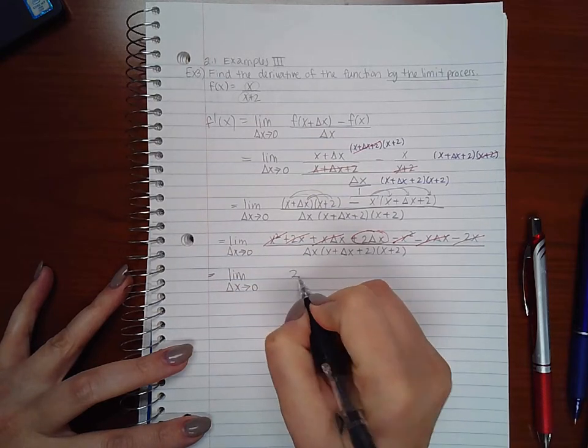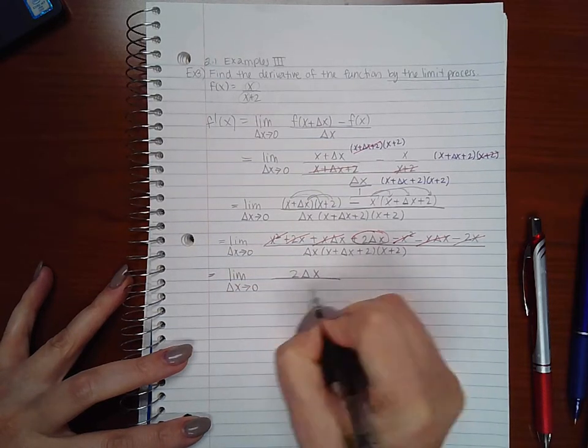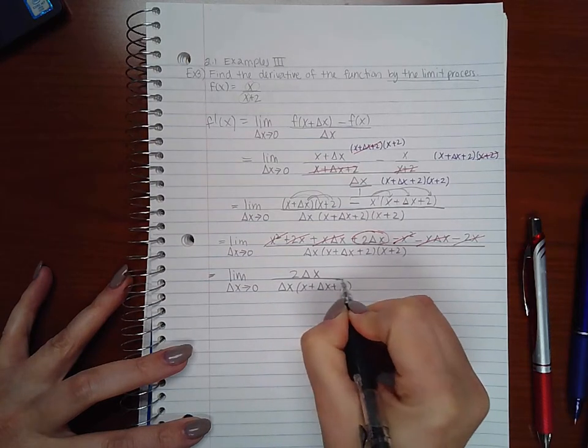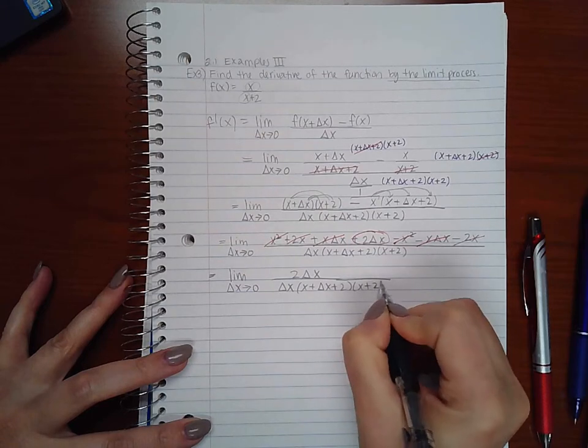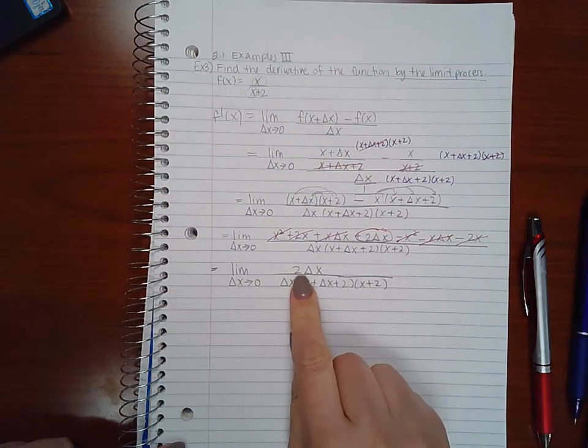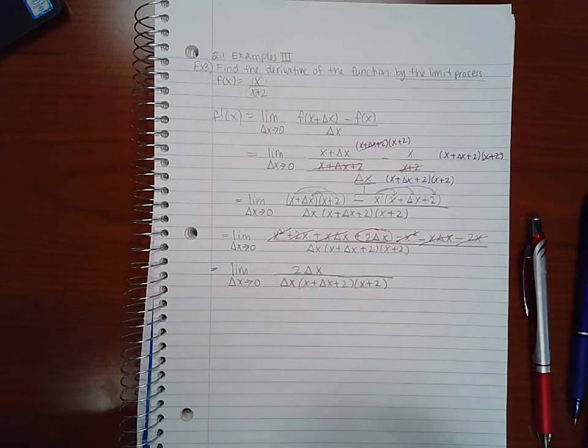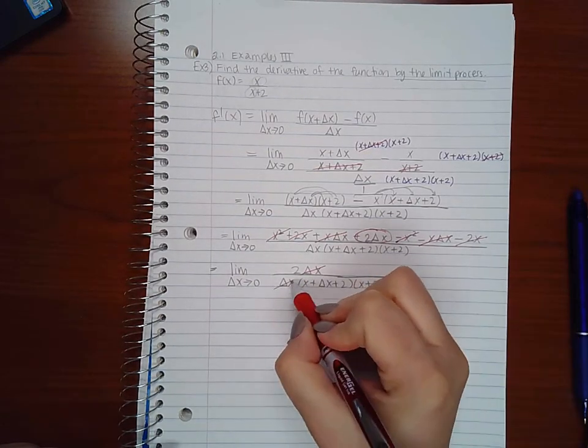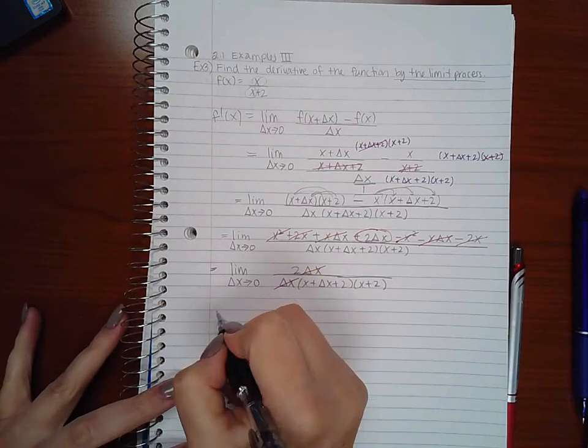So I have 2 delta x over delta x and the rest of my denominator which is pretty lengthy. Now here since I only have one term I don't need to necessarily factor out the delta x, but this delta x factor will reduce with the denominator's delta x factor.